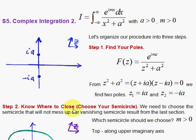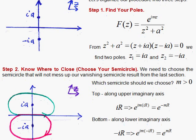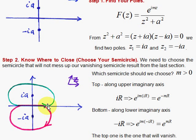Step 2, know where to close, know where to close the deal. Choose your semicircle. Now, in the previous section, we show that the semicircle gives you a 0 result. Because the r gets bigger and bigger, we want to make sure that this exponential is not going to mess us up. So here's the trick.